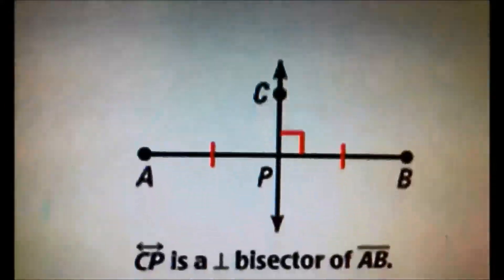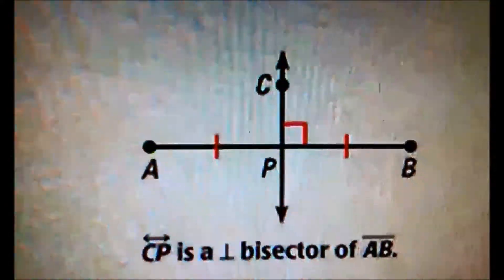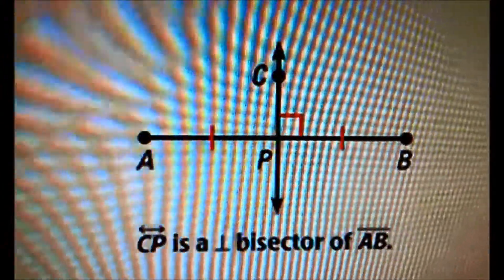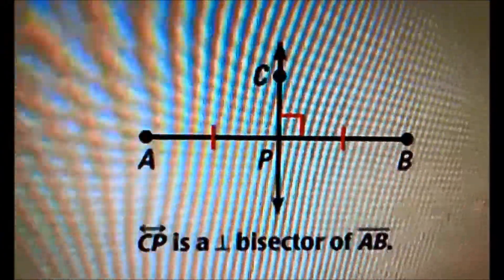Now we are on chapter 5.2. This chapter focuses on perpendicular bisector. What is a perpendicular bisector? Well, a perpendicular bisector is a segment, ray, line, or plane that is perpendicular to a segment at its midpoint.